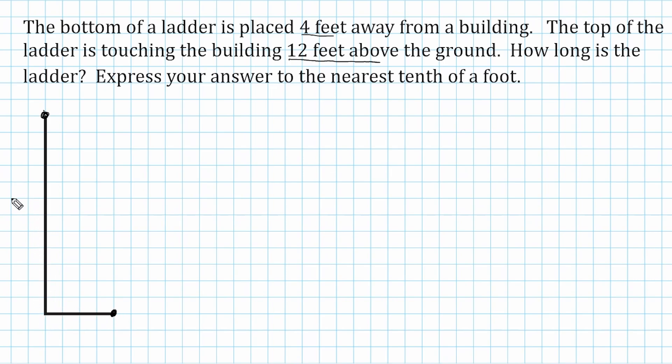So those two distances, 12 and 4, form a right angle, and those are the legs of our right triangle. And what we have to do is determine the length of the ladder, which really is the hypotenuse of our right triangle.